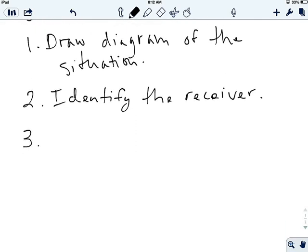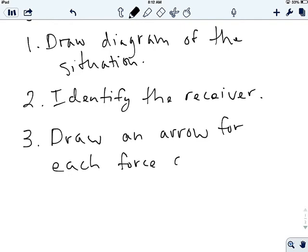Okay, so once we've identified the receiver, the next thing is we're going to draw the forces. So we're going to draw an arrow for each force acting on the receiver. It's important that you see that we're only going to label the ones that are acting on the receiver. If it's irrelevant to the receiver, we're not going to label that.